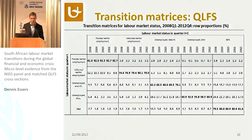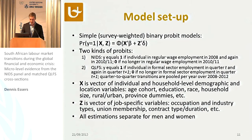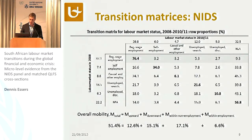Nevertheless, in this paper I focus on downward mobility and calculate decomposable mobility measures. My empirical model is a survey-weighted binary probit. I estimate two kinds of probits, one for NIDS and one for QLFS. My outcome variable equals one if an individual in regular wage employment in 2008 was again in regular wage employment by 2010–11, and zero if that individual was initially in regular wage employment but no longer so in 2010. I leave out those people who did not have a job when the crisis hit, focusing only on individuals in the first row of the transition matrix.